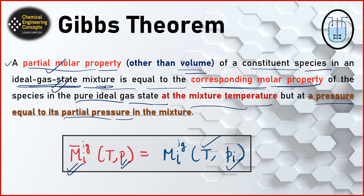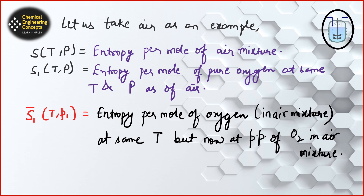Partial pressure of a component i is the specific pressure of that component in the mixture. The summation of all partial pressures pi equals the total pressure — all components' partial pressures combine to make the total pressure, which we all know. For a simple example, take air: we have 0.21 moles of oxygen and 0.79 moles of nitrogen in 1 mole of air. If we talk about entropy S at T and P, this tells us about the entropy per mole of the air mixture.